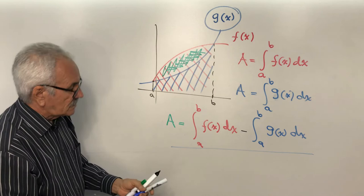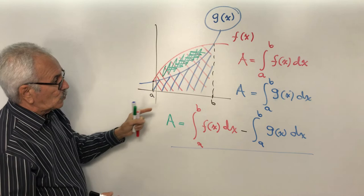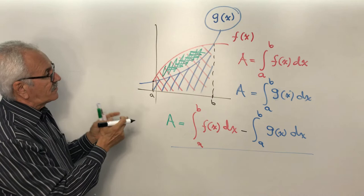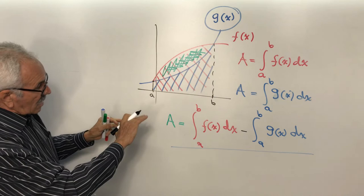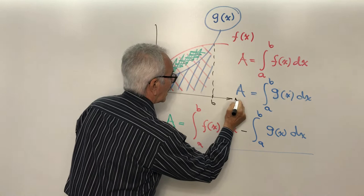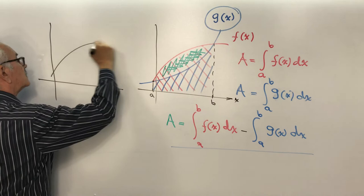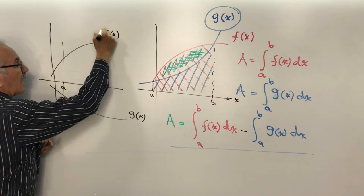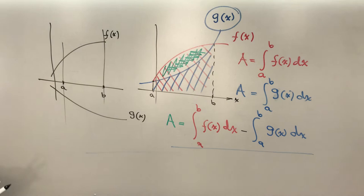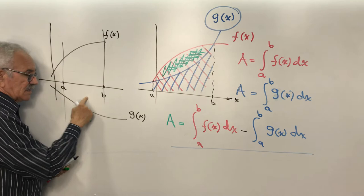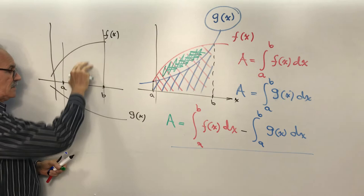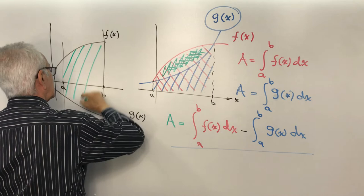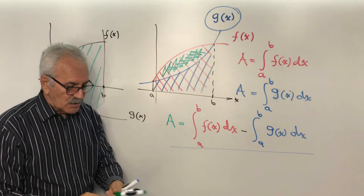Importantly, if any one of these areas is under the x-axis — for example f(x) above and g(x) below between A and B — we use exactly the same equation, because that integral will be negative and minus times minus becomes plus. So you are adding both areas. This representation is a universal equation that works in any case.